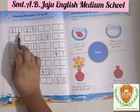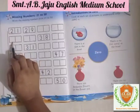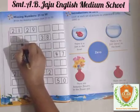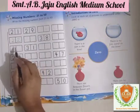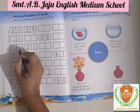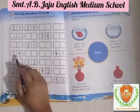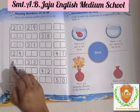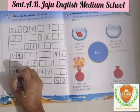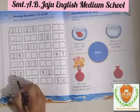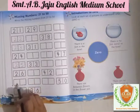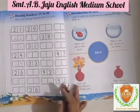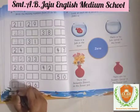Here is 21. After 21, which number will come? Write down 22. First write down 2, then one more 2 — so 22. After 22, write down 23. After 23, here 24 is already given. After 24, write down 25. Then 26. After 27, write down 28.